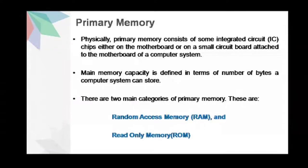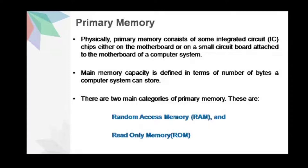Each word or location has a built-in and unique number assigned to it. For example, if a memory has 1024 locations, then the address ranges from 0 to 1023. We have all heard about 8-bit computers, 16-bit computers and so on. The numbers here refer to the total number of bits per memory word. The main memory capacity is defined in terms of the number of bytes a computer system can store. There are two main categories of primary memory: random access memory or RAM, and read-only memory or ROM.